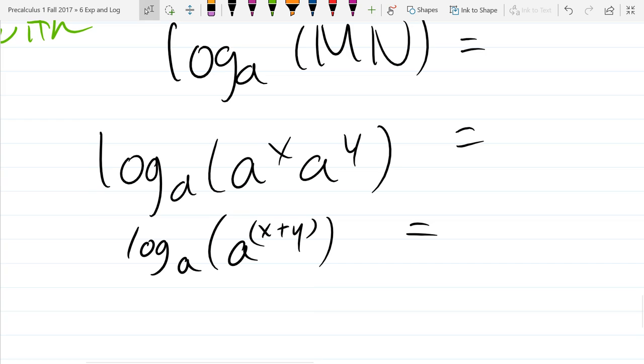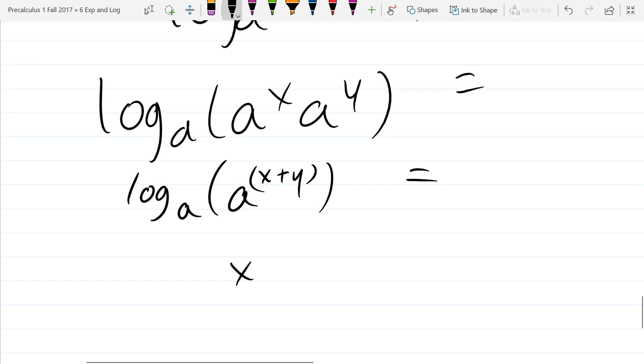I do have a log identity I can apply now. What does this simplify to? You can look back in your notes. I think there's only five identities now. Should be pretty clear which one to use. So this simplifies to x plus y. The base a, the other base a cancel out.